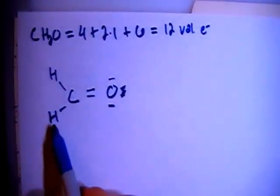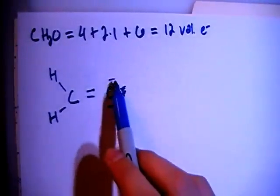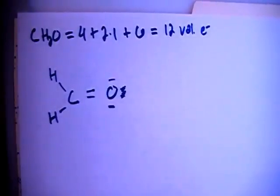Now, each hydrogen has 2, carbon has 8, and so does the oxygen. So this should be the correct structure.